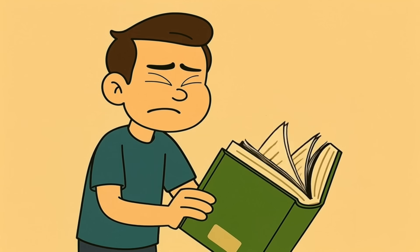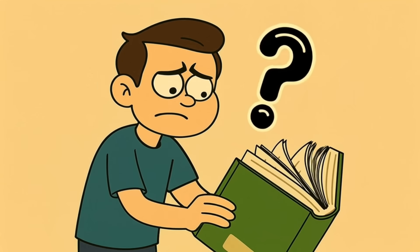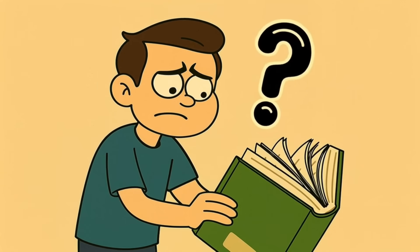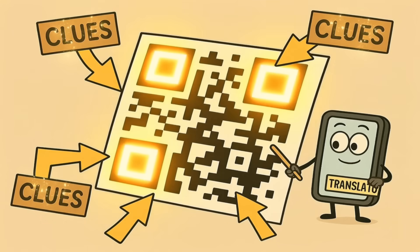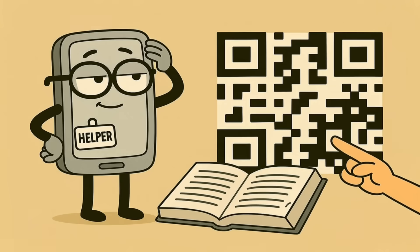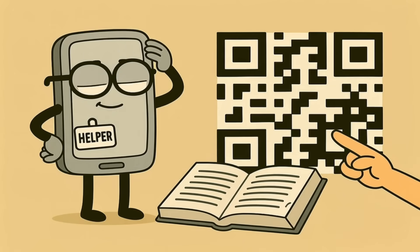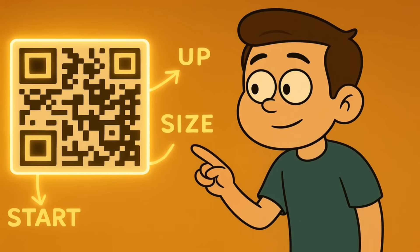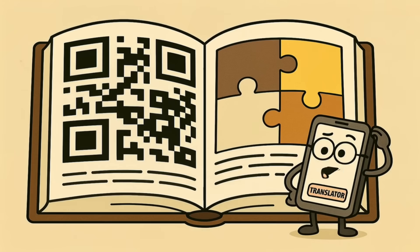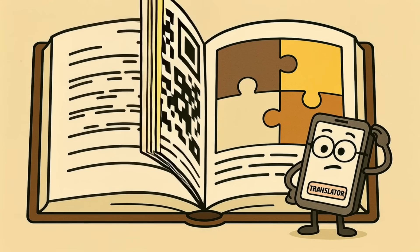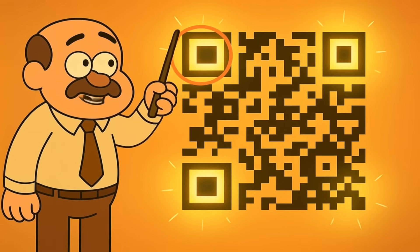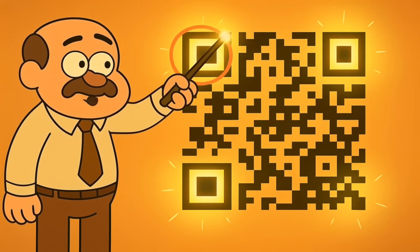Think of it like a book. When you open a book, you know where to start reading because the words are on the page. There are corners on the page and the lines are straight. You don't just start reading from the binding or the back cover. A QR code has to give your phone the same kind of clues. Your phone is smart, but it's not that smart — it needs some help. It needs to know where the message starts, which way is up, and how big the letters are. So let's look at the parts of that square book.